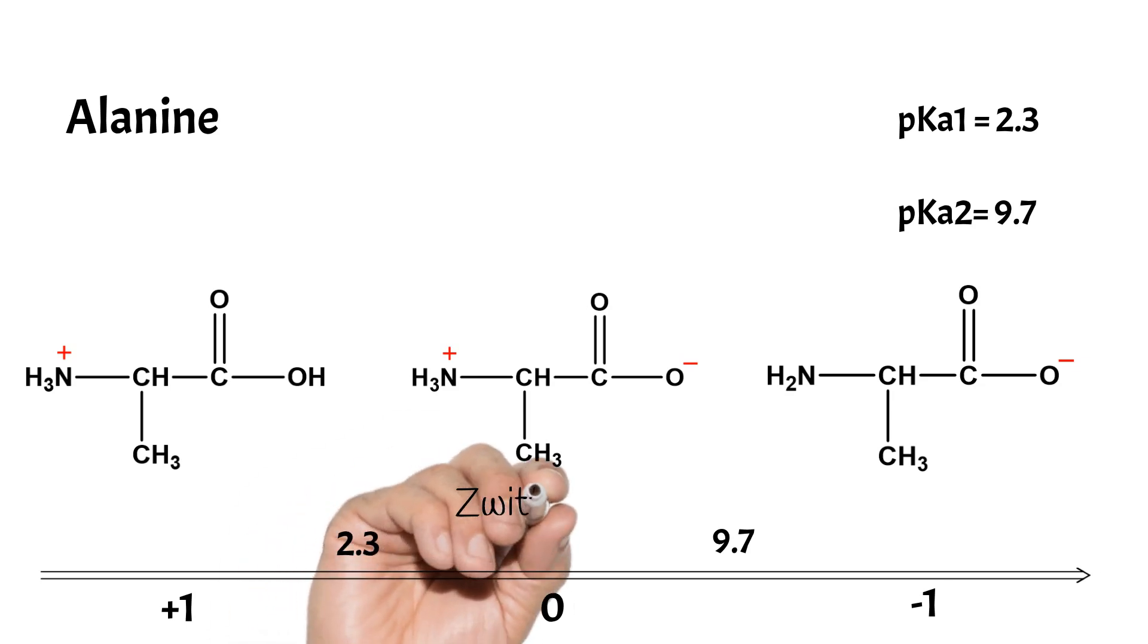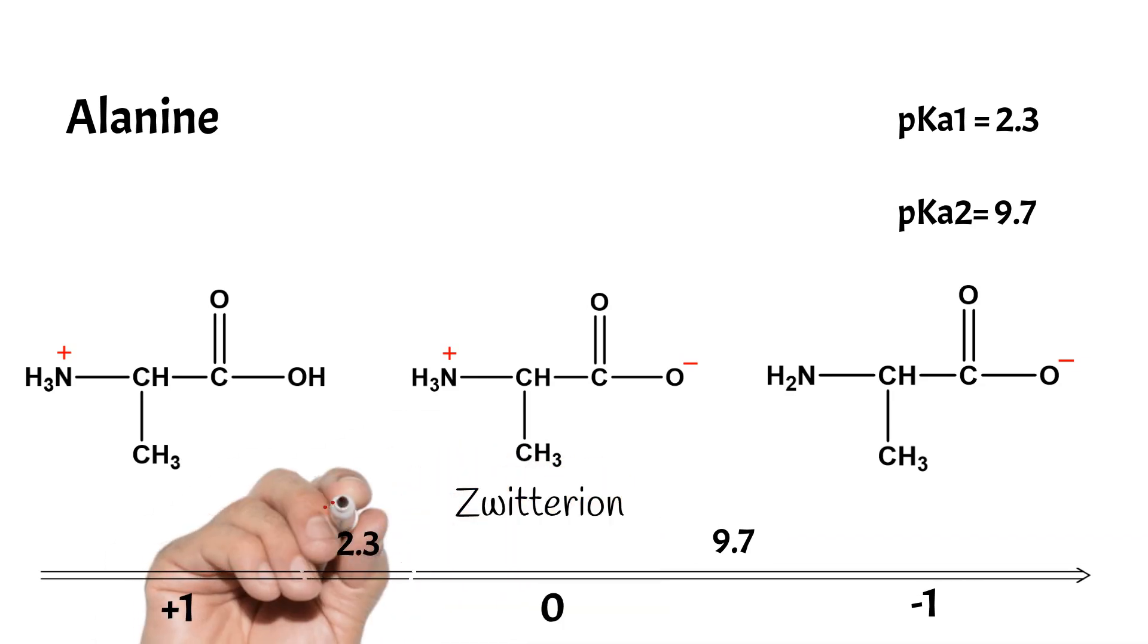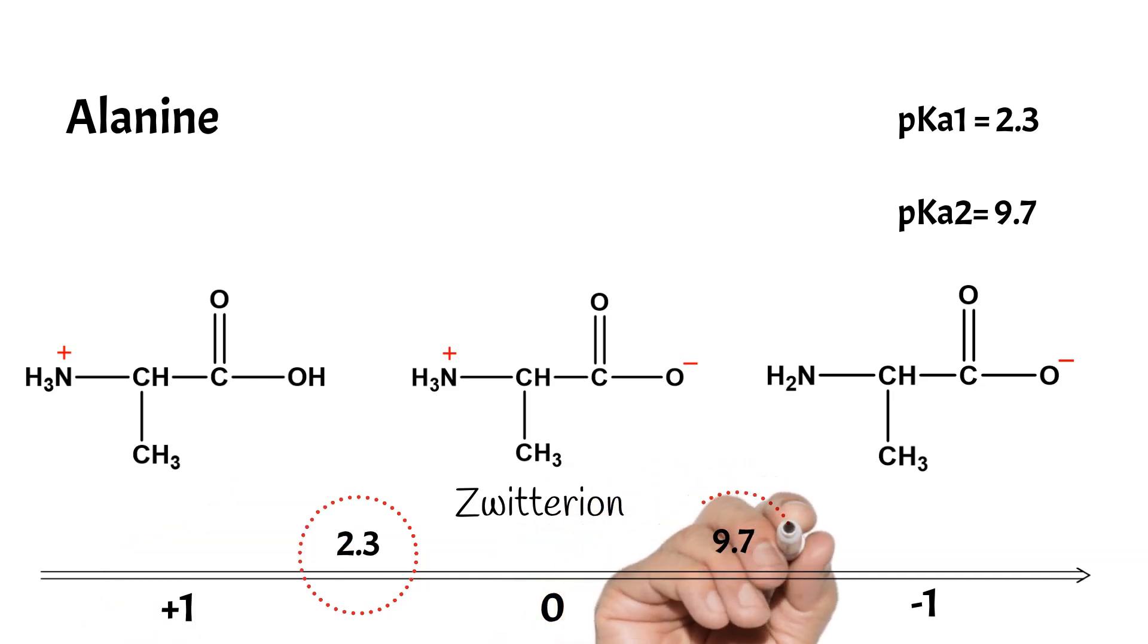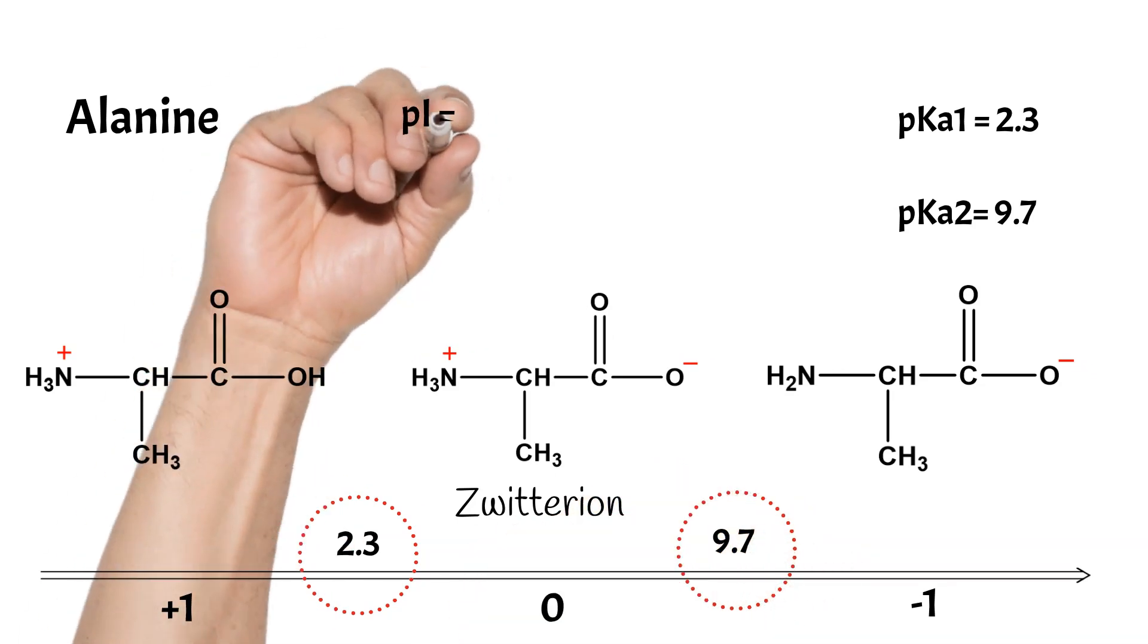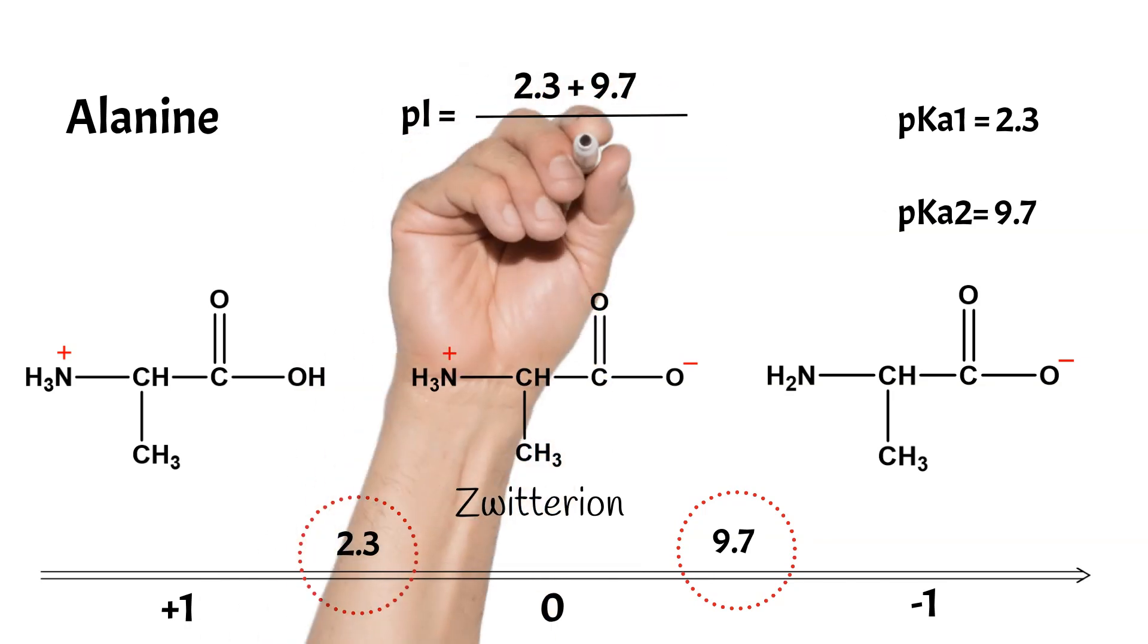As we see, the zwitterion with no net charge is the one in the middle. Then we use the pK values before and after the zwitterion to calculate the pI value.